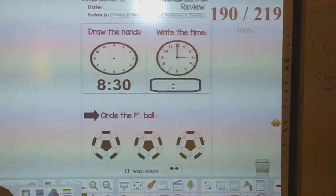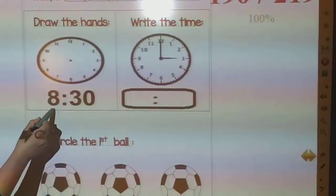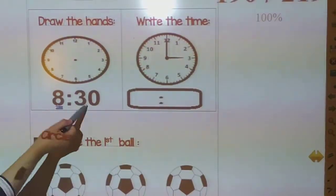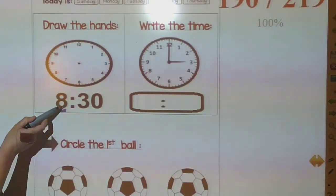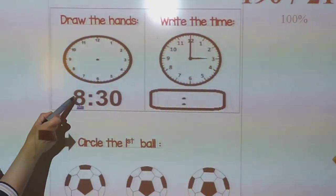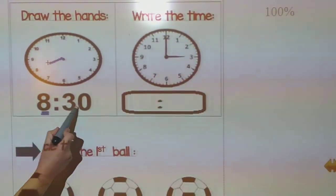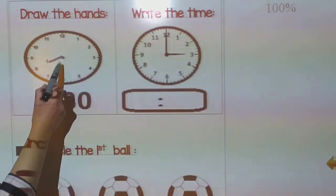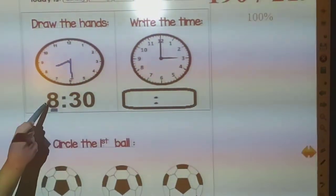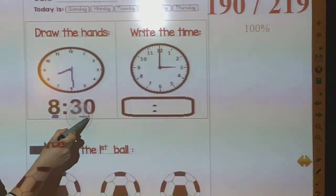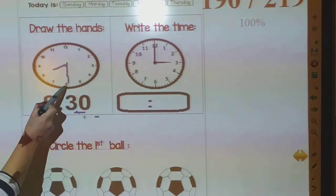Here in this question, I want you to draw the hands of the clock. First, I have two numbers. This left number or this side, number eight. So it means the short hand will point to number eight. And the long hand, it will point to number, yes, six. So it's eight thirty. If I have number thirty here, I will draw the long hand point to number six.